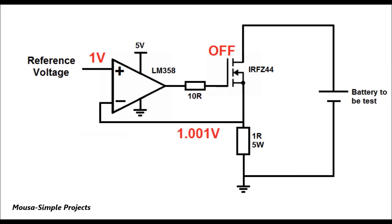As soon as the current becomes more than one amp, according to Ohm's law the voltage across the resistor becomes more than one volt. At this point the voltage on the inverting input of the op-amp becomes greater than the non-inverting input, so the output goes low and turns off the MOSFET. This cycle repeats and the current stays constant.